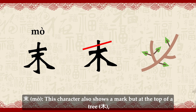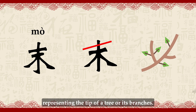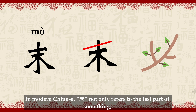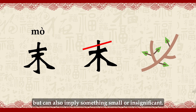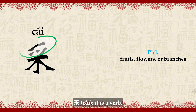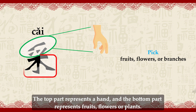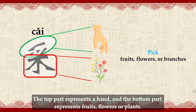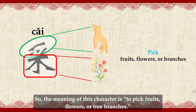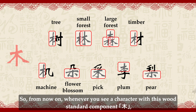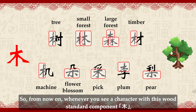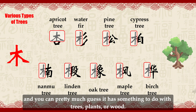Another character also shows a mark but at the top of a tree, representing the tip of a tree or its branch. In modern Chinese, this character not only refers to the last part of something but also implies something small or insignificant. And Cǎi (采) — it is a verb. The top part represents a hand and the bottom part represents fruits, flowers, or plants, so the meaning of this character is to pick fruits, flowers, or tree branches. From now on, whenever you see a character with this wood standard component, you can pretty much guess it has something to do with trees, plants, or wood.